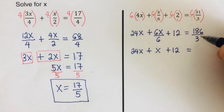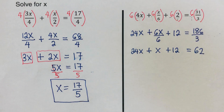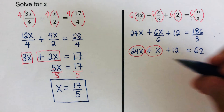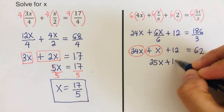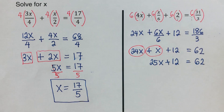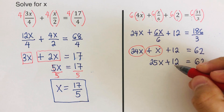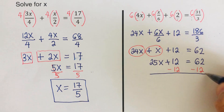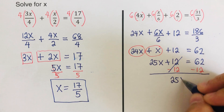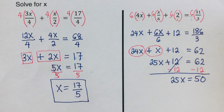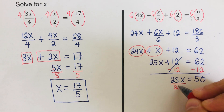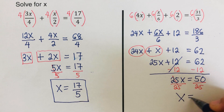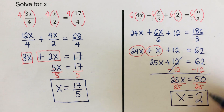Combining like terms: 24x + 1x = 25x. So 25x + 12 = 62. Subtracting 12 from both sides gives 25x = 50. Dividing both sides by 25 gives x = 2. Did you get the same answer? x = 2.